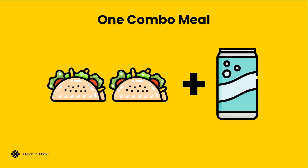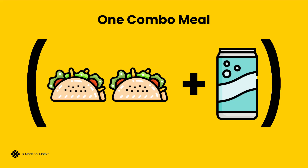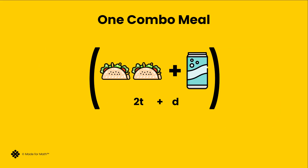Here we have a combo meal that includes two tacos and one drink. Let's create a math expression. These parentheses help me organize that this is one combo meal. The combo meal has two tacos plus one drink. What would it look like if three friends bought the same meal?